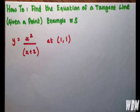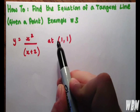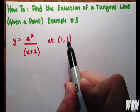This is the third example of how to find the equation of a tangent line given a point. Here we have y equals x squared over x plus 2 at the point x equals 1 and y equals 1.